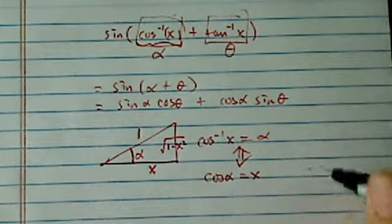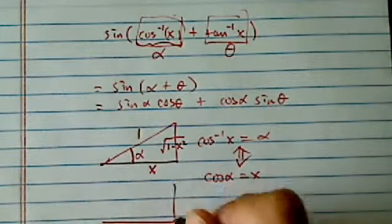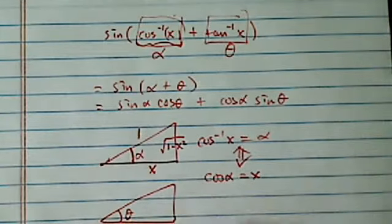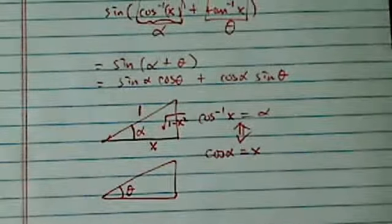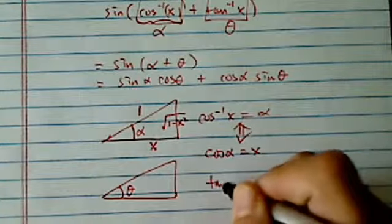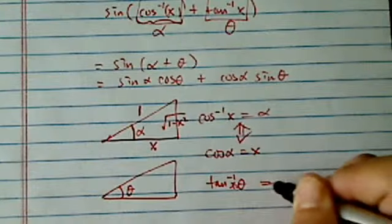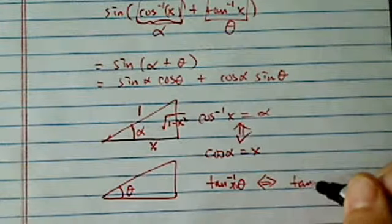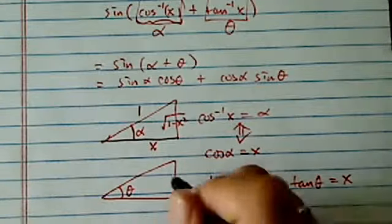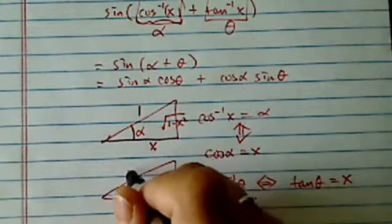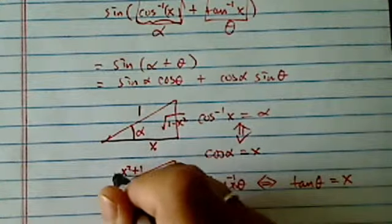Let's do the same thing for the theta angle here. Given that tangent inverse of x is equal to theta, then that's the same thing to say tangent theta is equal to x, so x over 1, and then this becomes x squared plus 1.